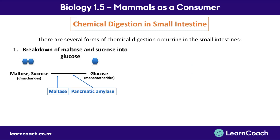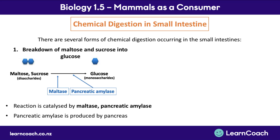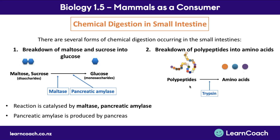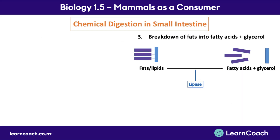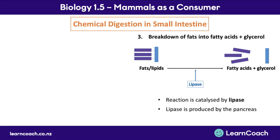The small intestine is where the bulk of chemical digestion occurs, with several reactions happening simultaneously. First, maltose and sucrose are broken down into glucose by maltase and pancreatic amylase — pancreatic amylase is produced by the pancreas. Second, polypeptides are broken down into amino acids by trypsin, also produced by the pancreas. Third, fats are broken down into fatty acids and glycerol by lipase, which is also produced by the pancreas.